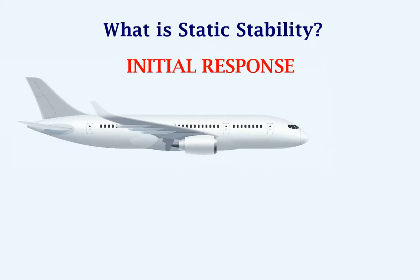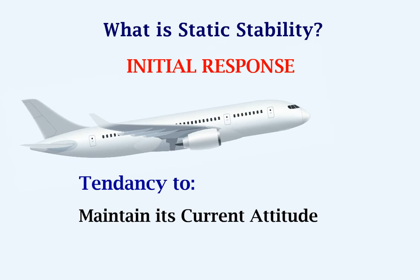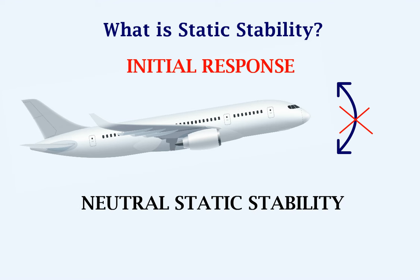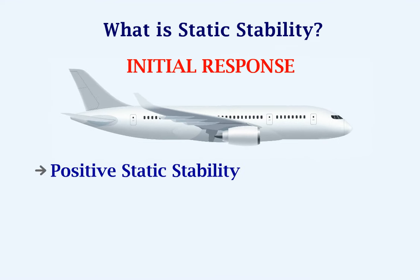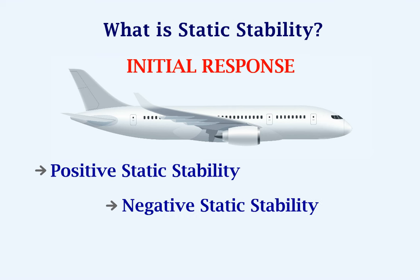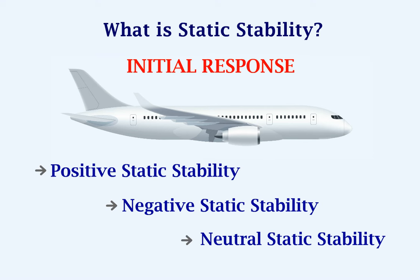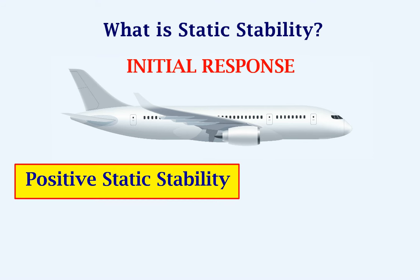After the disturbance, if the aircraft tends to maintain its new attitude — that is, not coming back or not deviating from the original attitude — it is said to have neutral static stability. Comparing these three, we understand that the aircraft should have positive static stability.